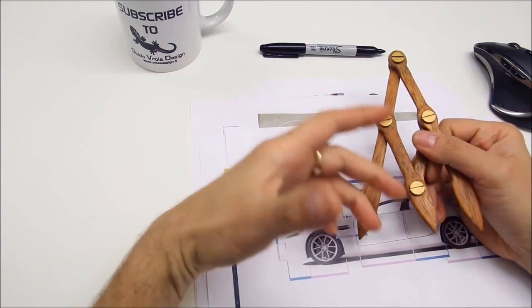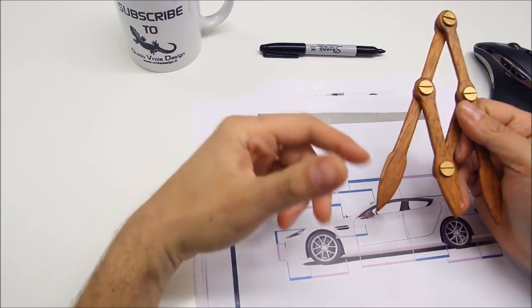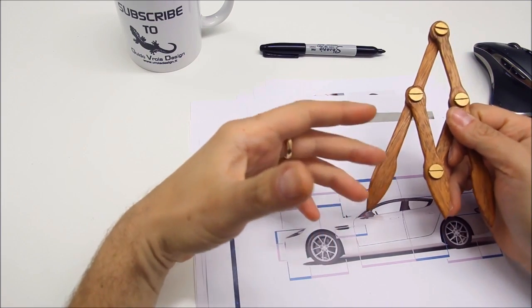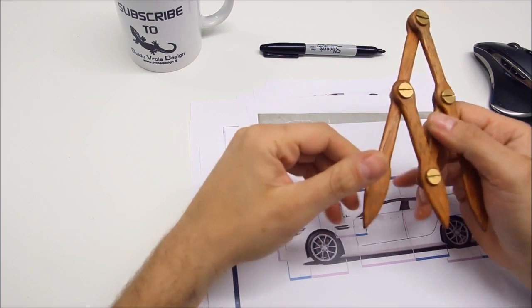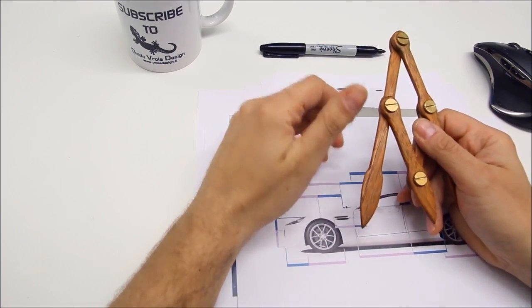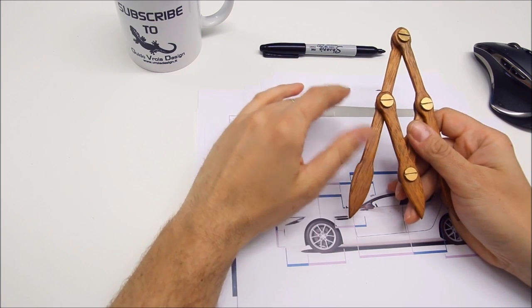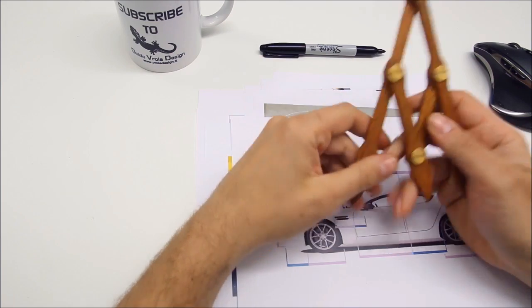So when you draw your furniture or lamps, everything, you have to have in mind this proportion, use it, use it, use it, until it will be so familiar that you can figure it in your mind without the need of using instruments.